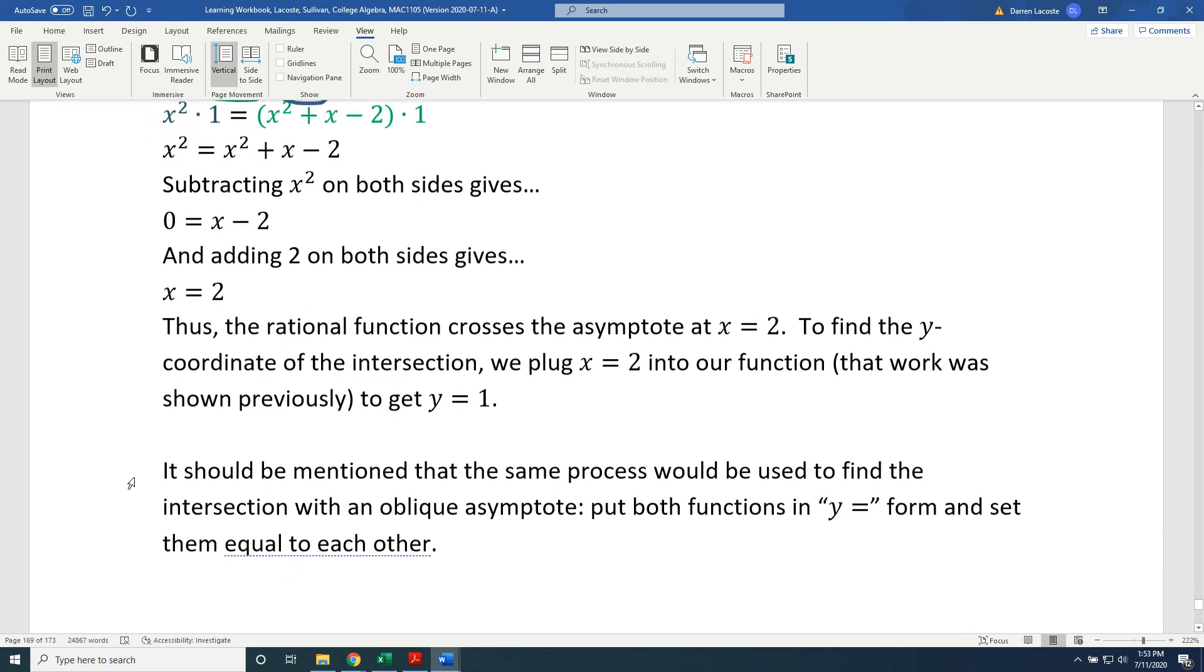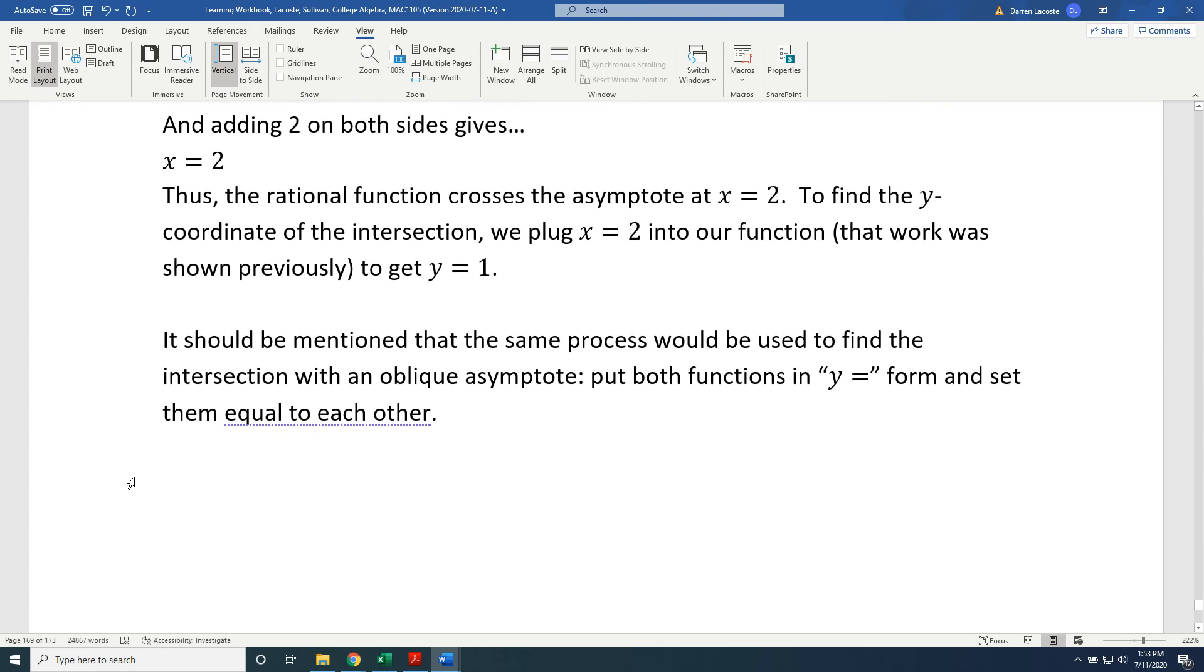Thus, the rational function crosses the asymptote at x = 2. To find the y-coordinate of the intersection, we plug x = 2 into our function, that work was shown previously, to get y = 1. It should be mentioned that the same process would be used to find the intersection with an oblique asymptote. Put both functions in y equals form and set them equal to each other.